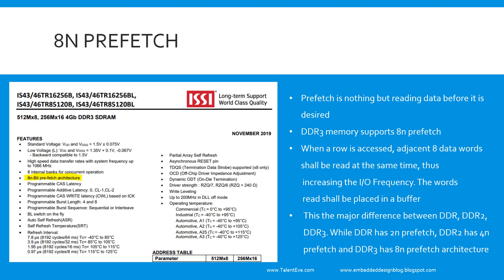The first thing to talk about when discussing DDR, and the difference between different DDR memories, is prefetch. Prefetch is basically reading the data even before it is required — that means you are reading the data and keeping it in a buffer.